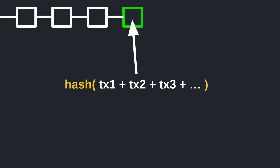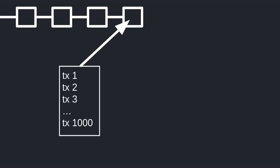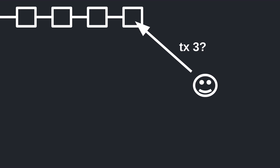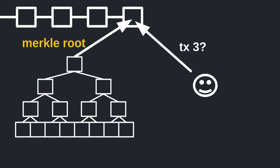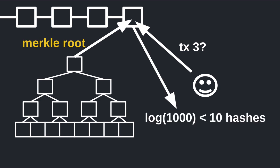Another way to prove that a transaction was included in a block would be to concatenate all of the transaction data and create a single hash from it. The problem with this approach is that in order to recompute the hash you need all of the transaction data. So if there were 1000 transactions in a block and Alice wants to verify her transaction, she would have to download all 1000 transactions and then compute the hash.